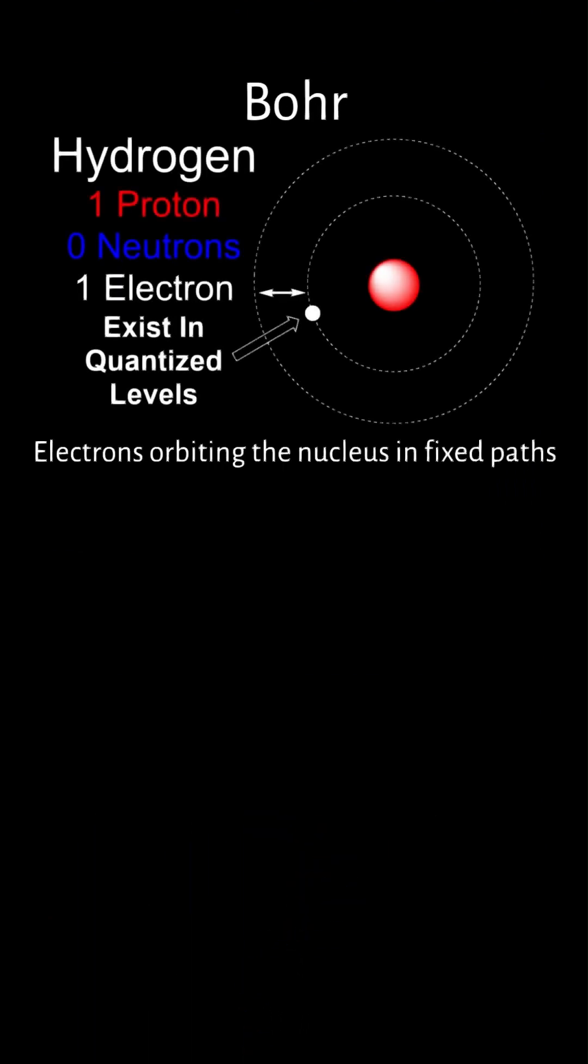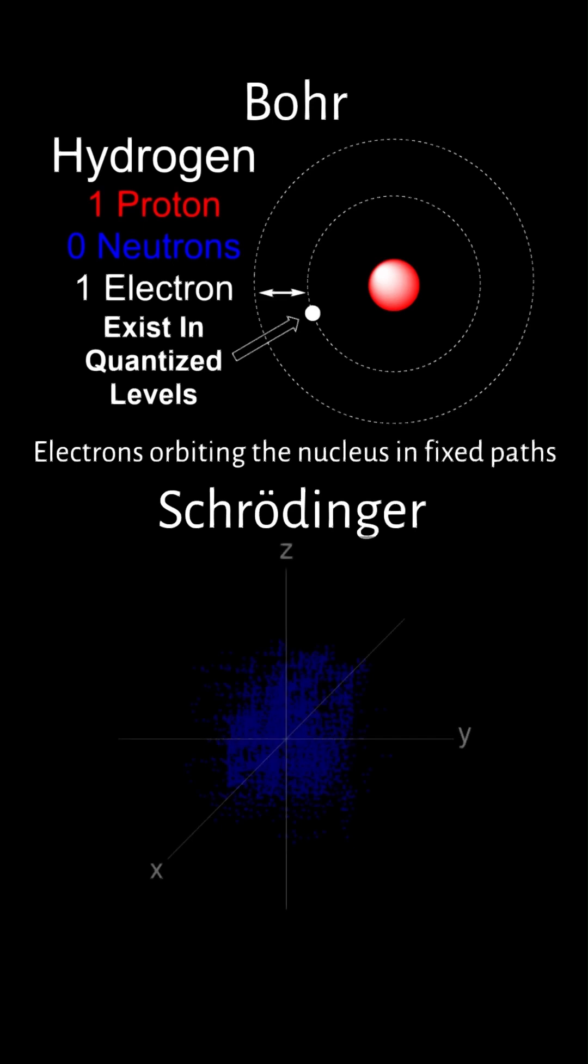Unlike Niels Bohr's model, which depicted electrons orbiting the nucleus in fixed paths, Schrödinger's approach suggests that electrons occupy three-dimensional spaces known as orbitals.